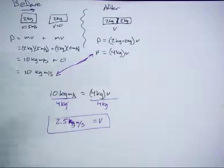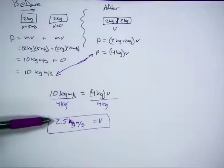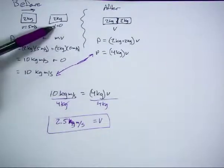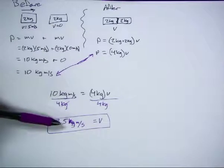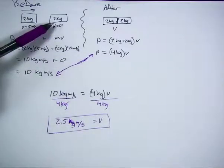We can go back and interpret this. This car was moving 5 meters per second, and after the collision it's moving 2.5 meters per second, so it slowed down. That makes sense. This car was moving zero, and afterwards it's moving 2.5 meters per second—it sped up. That also makes sense, since something hit it.